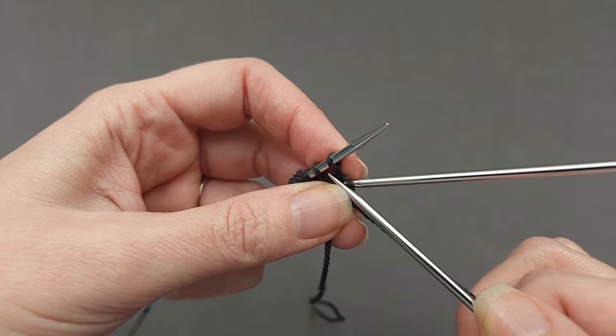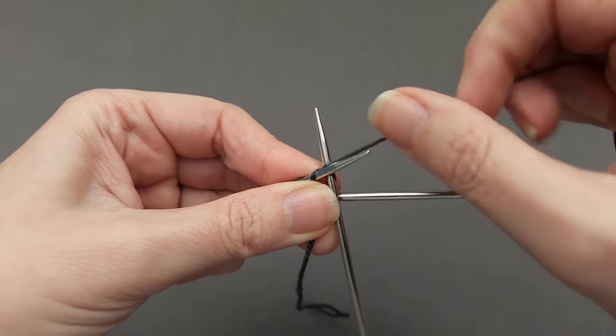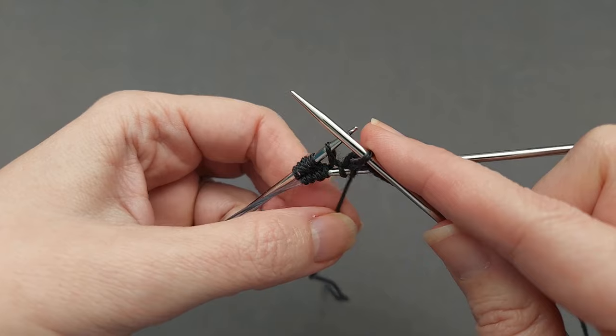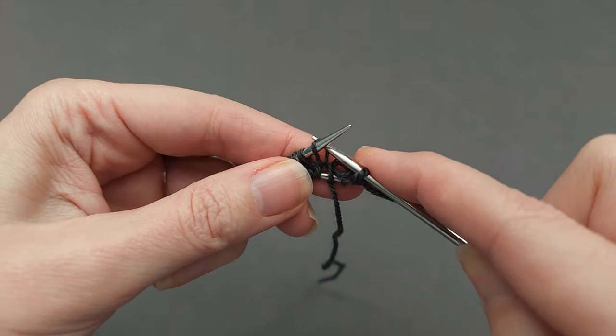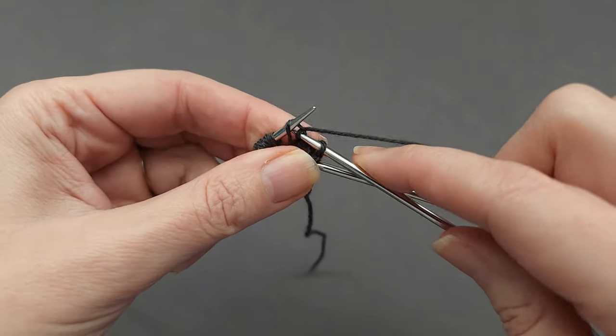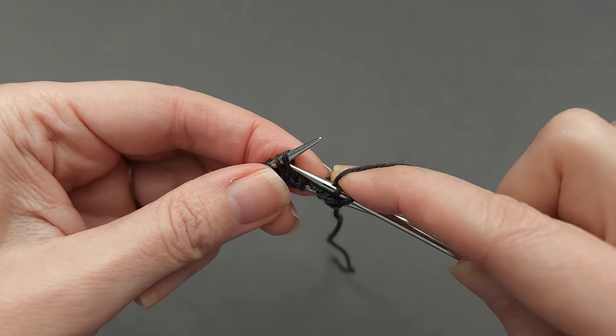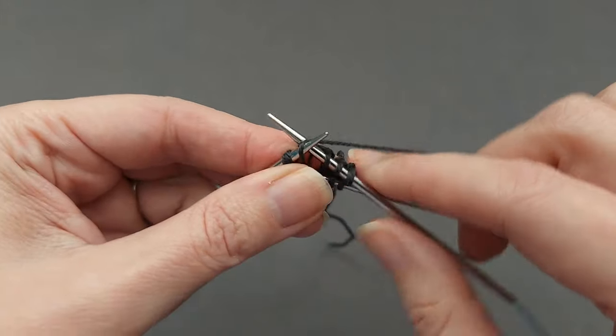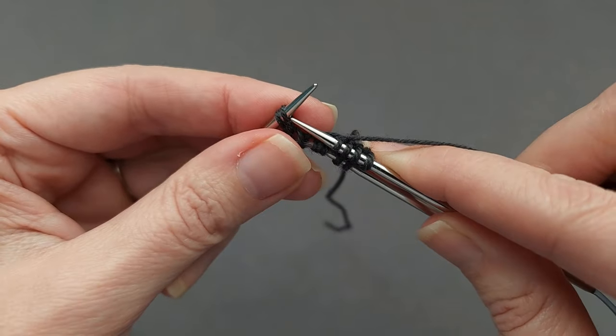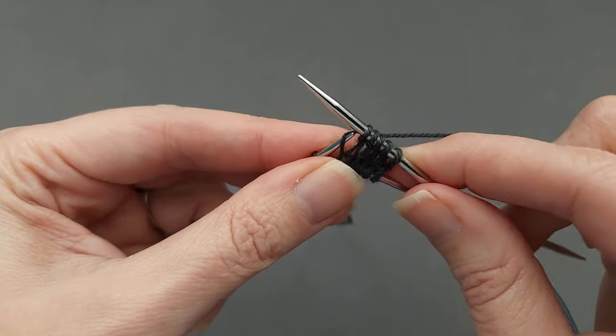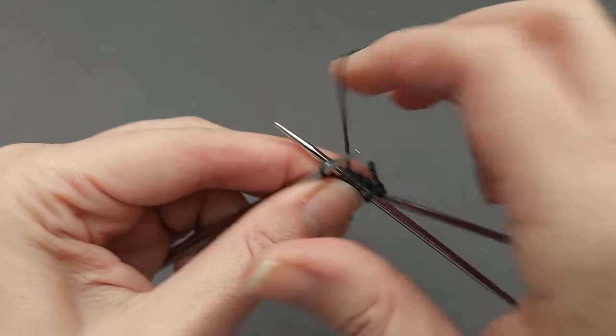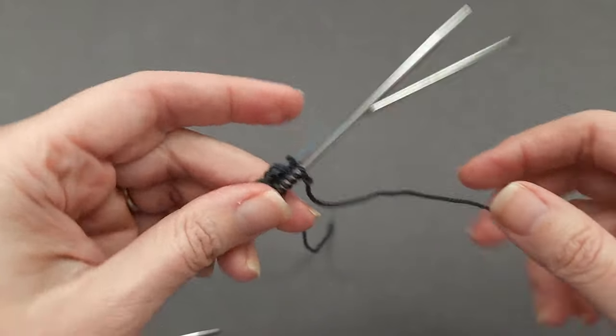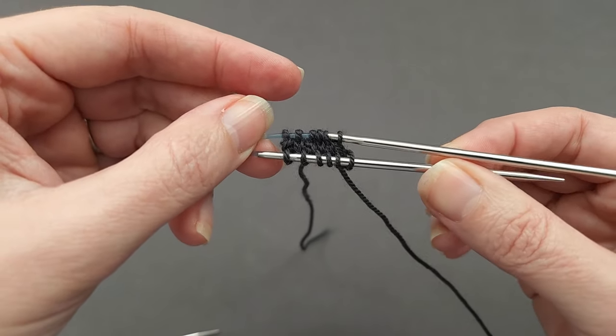Knitting these stitches through the back of the loop ensures that they won't be twisted in our fabric. So again, you're knitting through the back of the loop. At the end of the first round, you're ready to rotate again and continue on with your pattern.